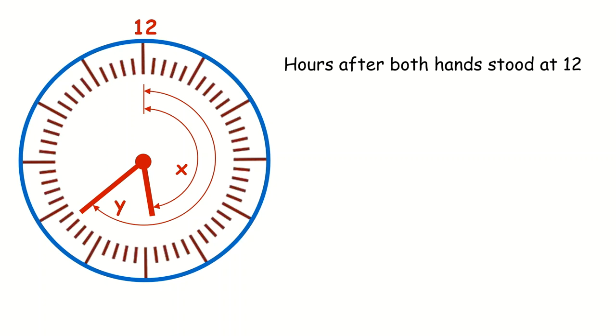For the number of hours after both hands stood at 12 is going to be x divided by 5 minus y divided by 60. This is going to be a whole number between 0 and 11. That is how many full hours have passed after 12 o'clock. Let's call it m.